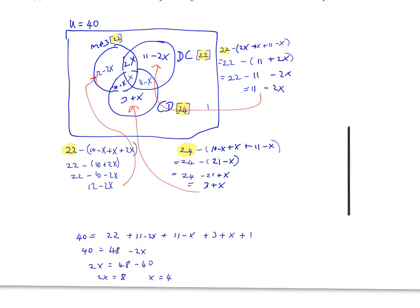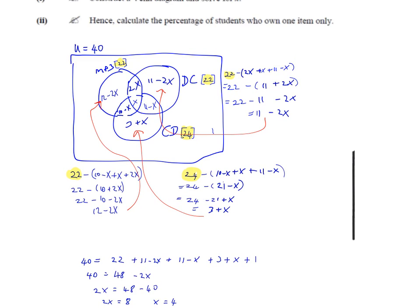The second question says hence calculate the percentage of students who own one item only. We have to work out the students who own one item only, so that would correspond to this area, this area, and this area. We'd have to replace the x's in all of these. So we get three students who own only digital cameras, seven students who own only CD players, and four students who own only MP3 players.